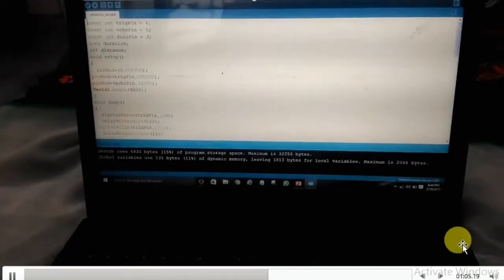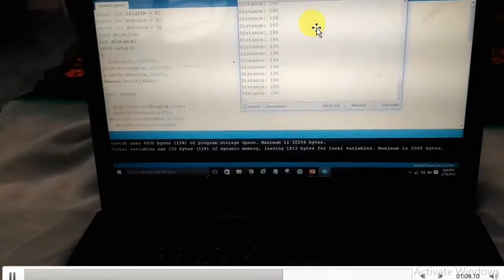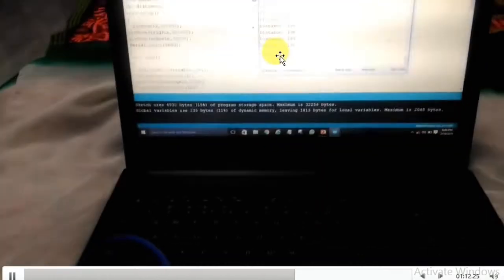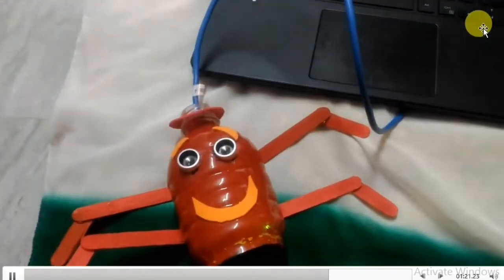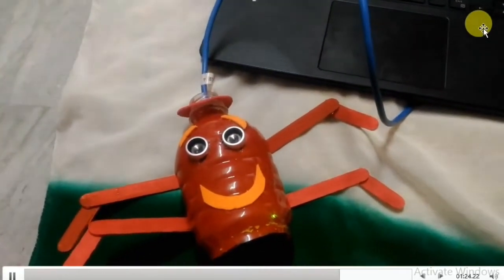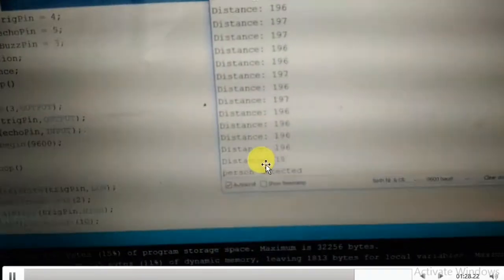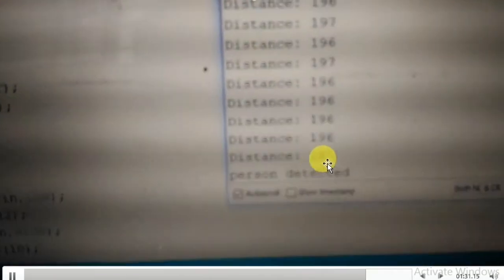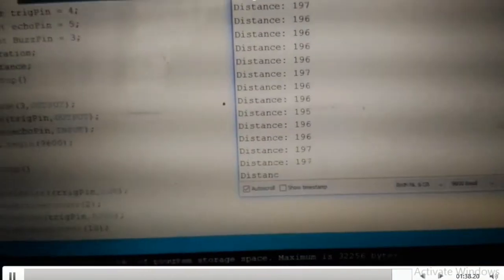On the screen you will see some distances - these are the distances that the ultrasonic sensor is sensing. Now if I put my hands over the ultrasonic sensor, it starts beeping. Here you can see this is being done at the distance of 18 centimeters. This is because I have set the distance of below 40 centimeters in the program.